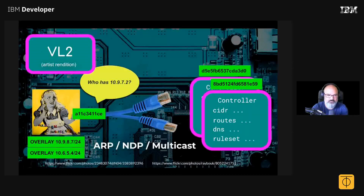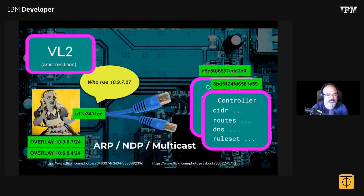Alice gets on an airplane and joins the Wi-Fi. Her overlay IP has not changed. So if Bob is pinging Alice from her apartment and she gets on the airplane and joins the Wi-Fi there, the ping resumes. She gets off the airplane, goes to a coffee shop, joins the Wi-Fi there — the ping resumes. As long as she has internet connectivity, her IP address on the ZeroTier network does not change. Her MAC address stays the same on the ZeroTier network, and Bob is allowed to ping her. From the view of the VL2 network, it just works exactly like Ethernet would.